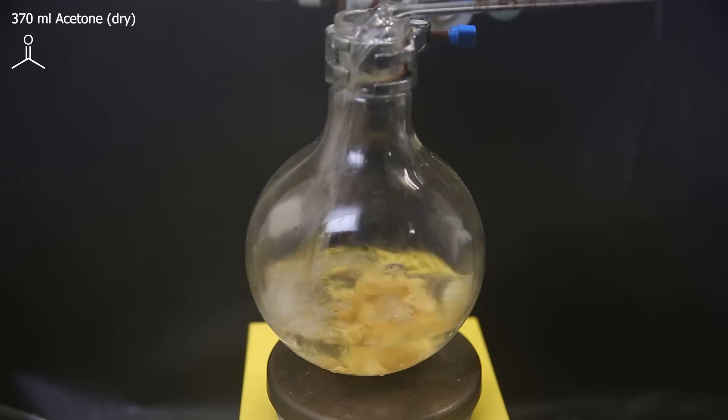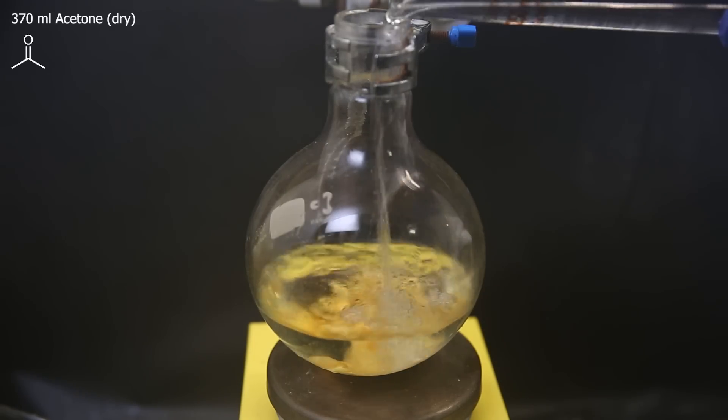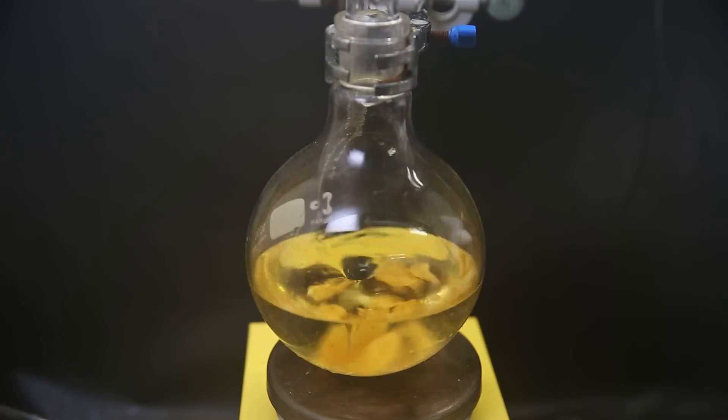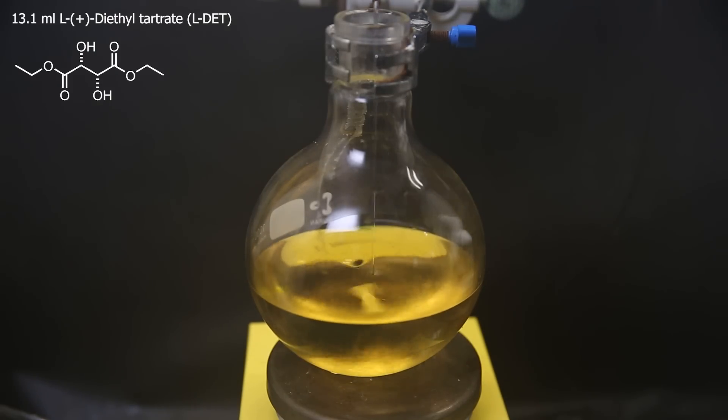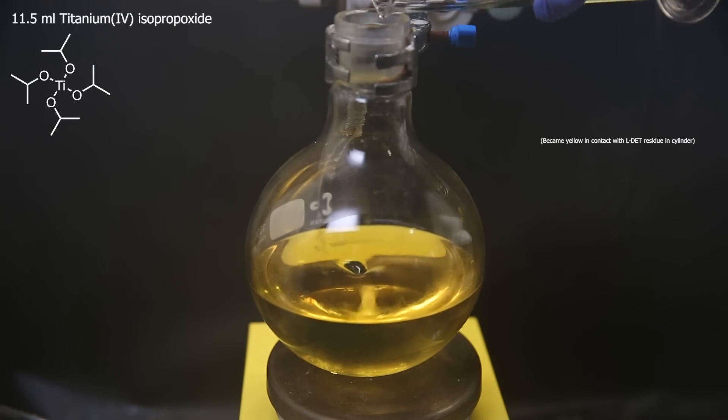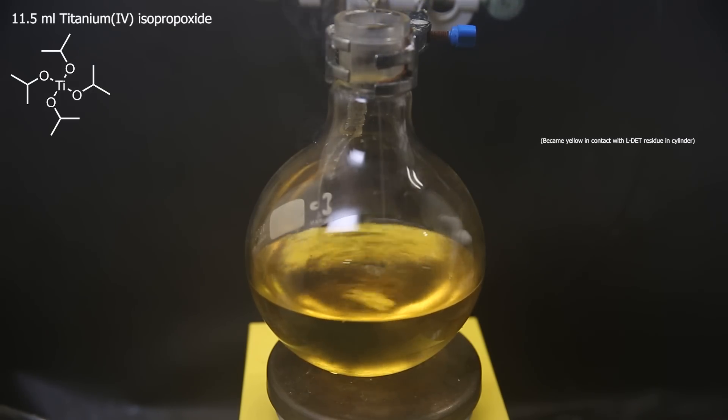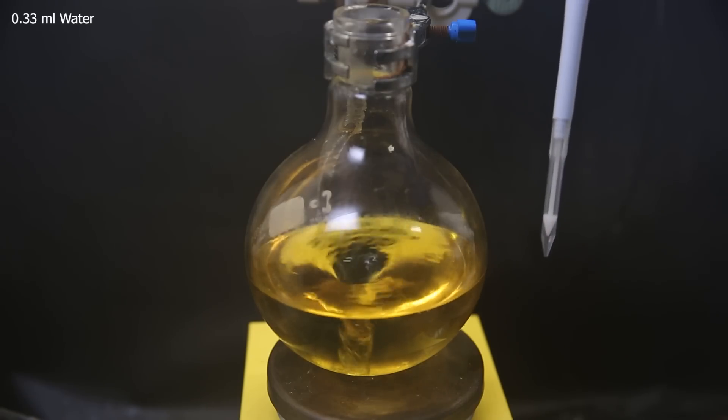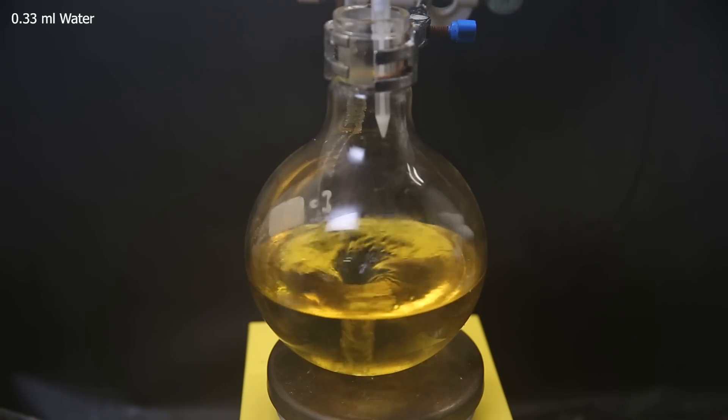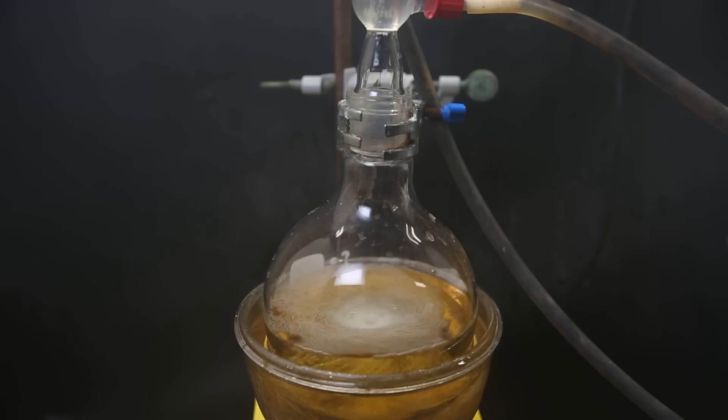So for that, I dissolve it all into 370 mls of dry acetone. As the first catalyst, I add in 13.1 mls of L-diethyl tartrate. And as the second catalyst, I add 11.5 mls of titanium isopropoxide. I let this mixture stir for 10 minutes to allow these to react, and then add in 0.33 mls of water as the third catalyst. I let it stir for 5 more minutes and then reflux this mixture in a glycerol heating bath for 1 hour to complete the formation of the catalyst complex.